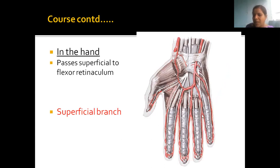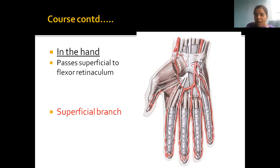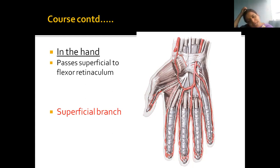The little finger is on the medial side and the ulnar nerve is on the medial side. The ulnar bone is on the medial side, hence the ulnar nerve is also on the medial side. This is our ulnar nerve supplying the medial aspect of the hand.